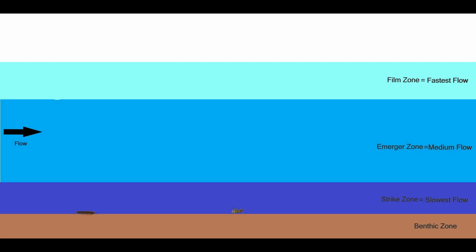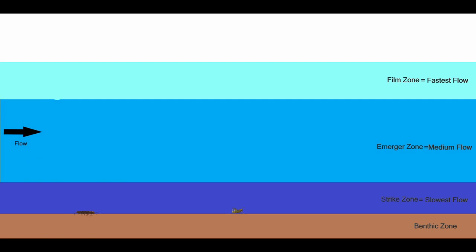This screen breaks down the different water layers in all rivers. There are many different vertical water layers in rivers, but for simplicity in this video, it's separated into three layers: the top layer called the film, the middle layer called the merger zone, and the deepest layer called the strike zone. All illustrations in this video show water flowing from left to right. The film zone is the shallowest water in the river, and is the fastest moving water in a river system.